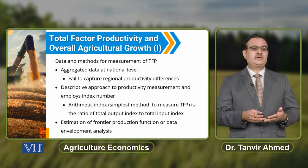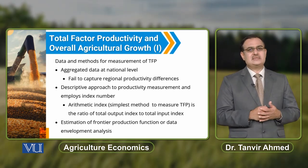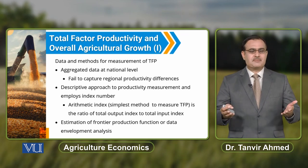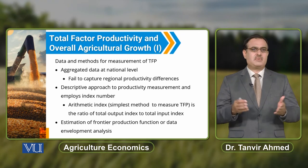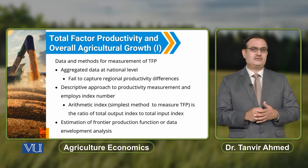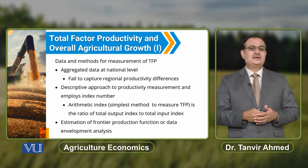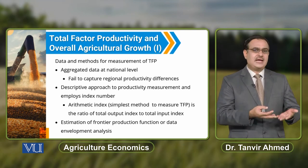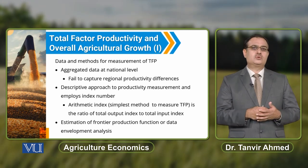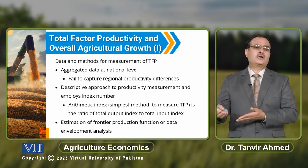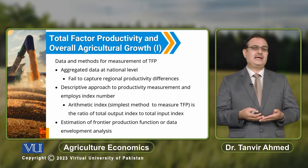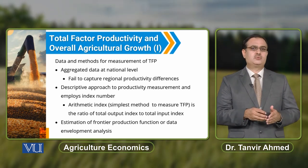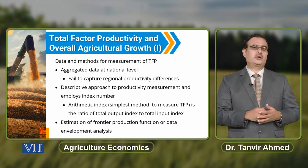For the measurement of factor productivity, you can also use the frontier production function or data envelopment analysis (DEA). At the farmer level of analysis, you can identify which farmers are producing efficiently. At an aggregated level, you can collect data from different nations to determine which nation is producing efficiently. You can also collect data at the district level to report which district is making production efficiently and which district has higher productivity.